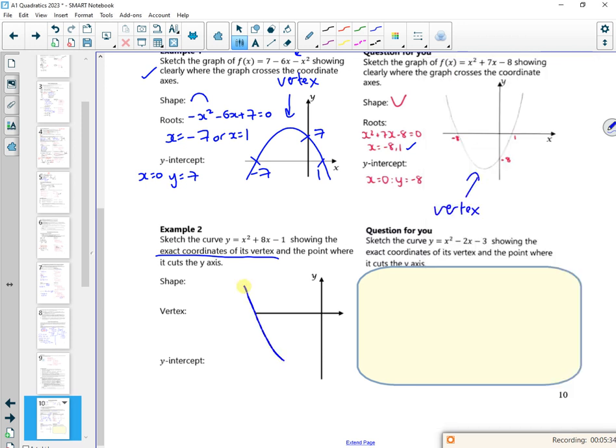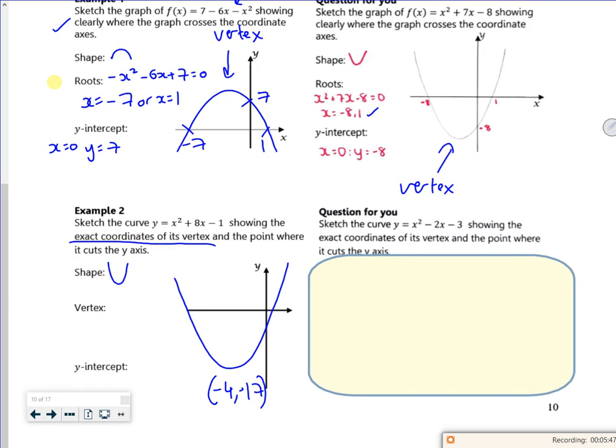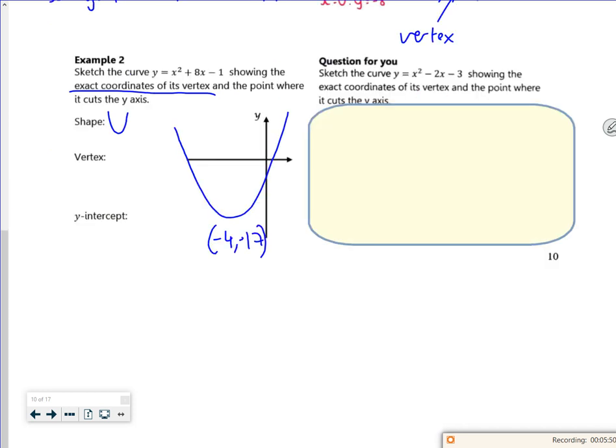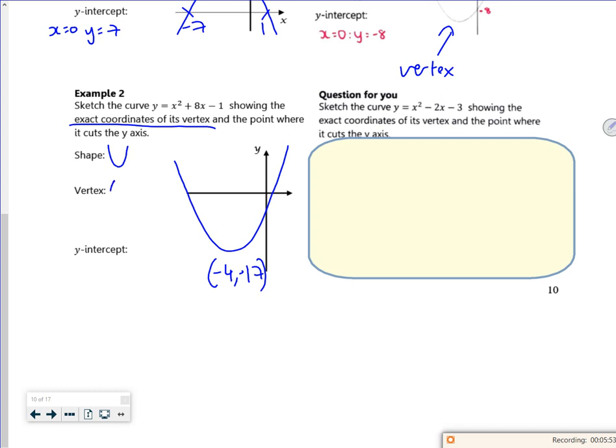So I know the graph is like that, minus 4, minus 17. My shape is a u-shape. If it didn't quite work right, I'd have to do completing the square, which for this is quite simple. Just (x + 4)² - 16 - 1. So (x + 4)² - 17. So you know the vertex will be (-4, -17), but my calculator gives it for me.